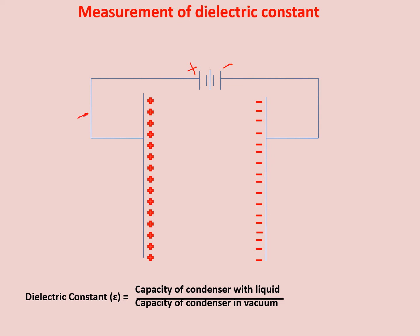एक point पे क्या होगा — जो electron move कर रहे हैं from the plate to the positive terminal, positive terminal उनको attract कर रहा है, पर साथ ही साथ इस plate में भी positive charge develop हुए हैं, तो यह positive charge भी electron को attract करेंगे — ultimately एक stop point आएगा, जहाँ further negative charge आगे move नहीं करेगा. कितना charge यह plates store करती हैं, that is known as the capacitance.